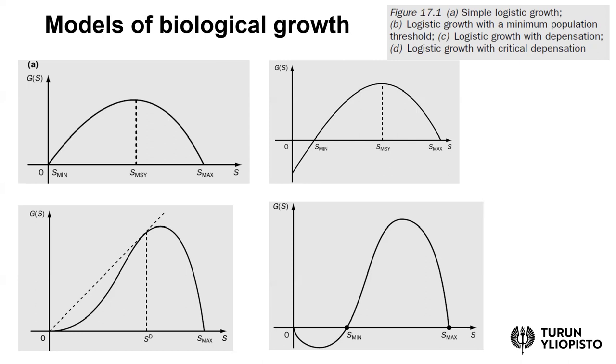If the fish population decreases below this minimum population, it's no longer able to reproduce itself, and therefore the stock starts to decrease and eventually there's extinction of that population. The similar concave logistic growth curve can take into account this kind of minimum threshold included in the model.